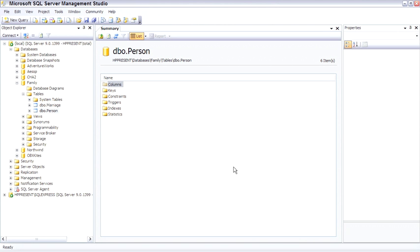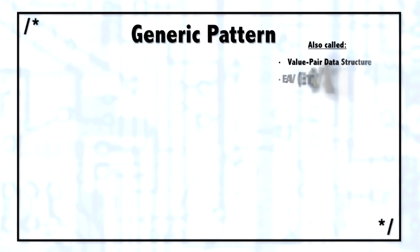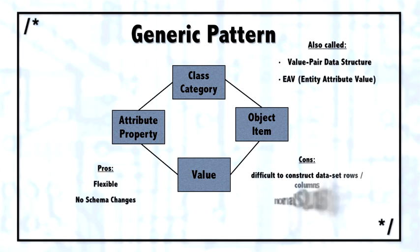The last pattern I want to mention, and I don't really recommend this pattern, but I see it often, is a pattern called the generic pattern. It's also called the value pairs pattern, or the EAV, meaning Entity, Attribute, Value pattern.